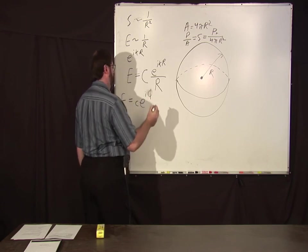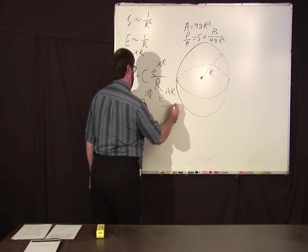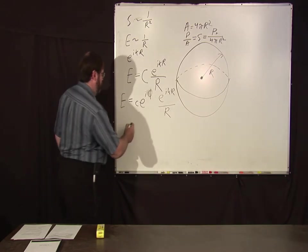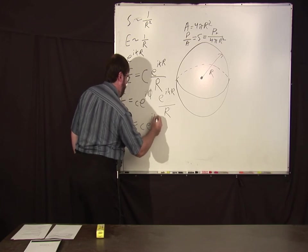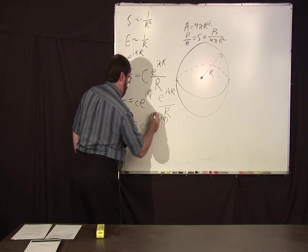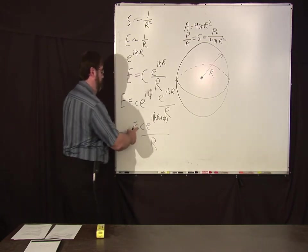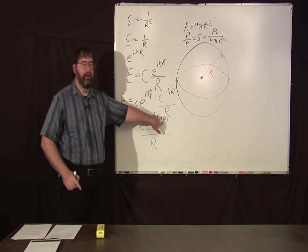My handwriting's horrible. Times e to the ikr over r, which of course then can be written as c e to the i k r plus phi over r, where this is a real constant for the amplitude and this is a real constant phase.